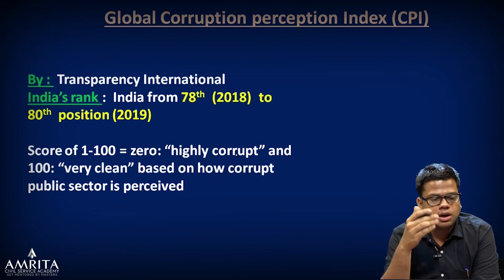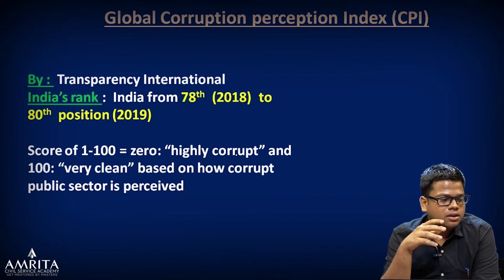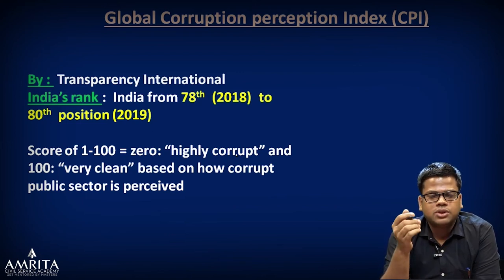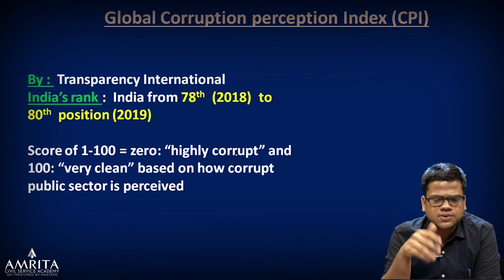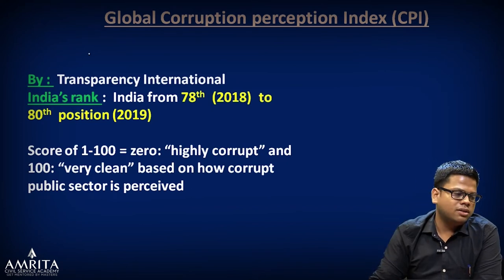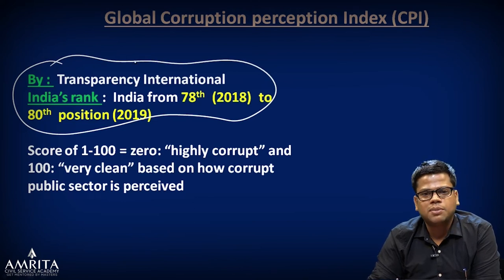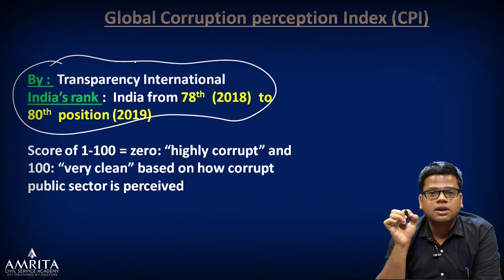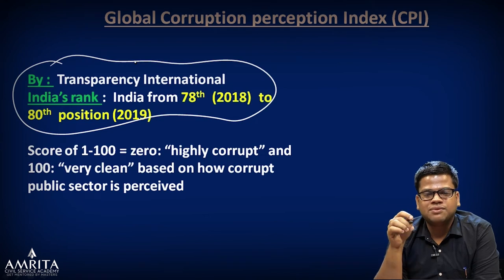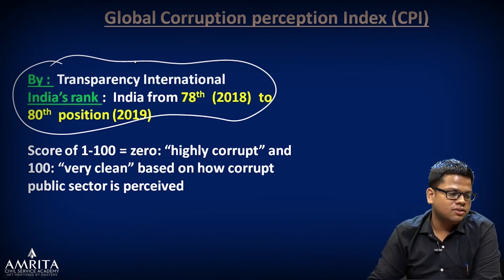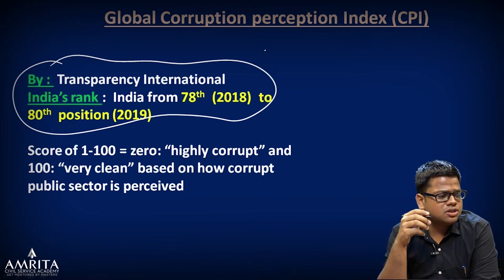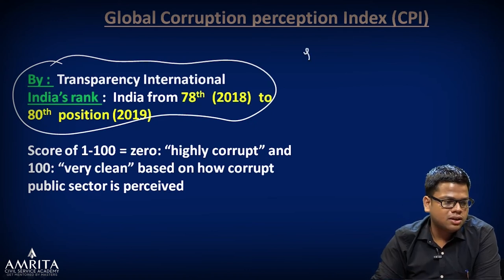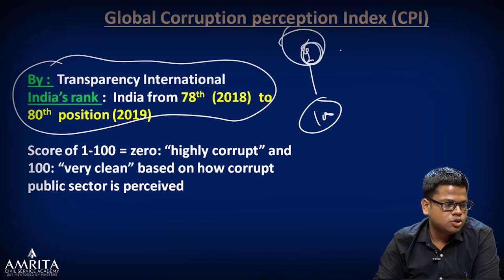The Global Corruption Perception Index is given by Transparency International. The index measures countries from 0 to 100 — zero is highly corrupt and 100 is very clean and transparent. India's rank has slipped from 78 to 80. Denmark and New Zealand are among the least corrupt countries. India has slipped two ranks. The theme this year was political funding. Serious aspirants should download this report — corruption is relevant for GS2, GS3, and ethics papers.